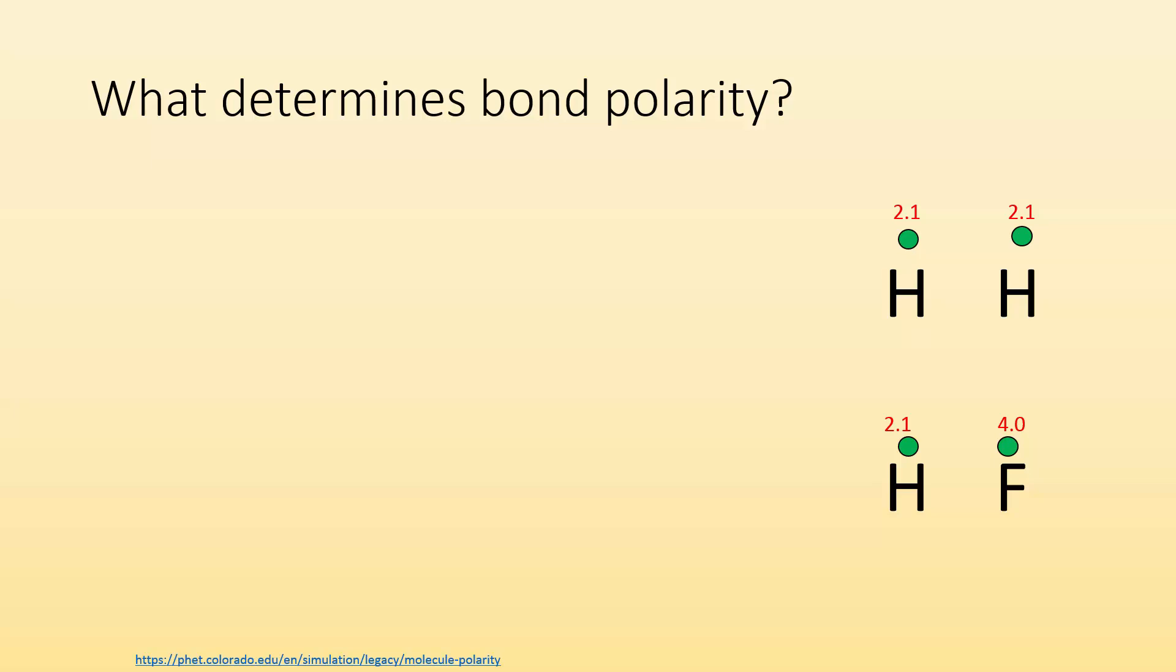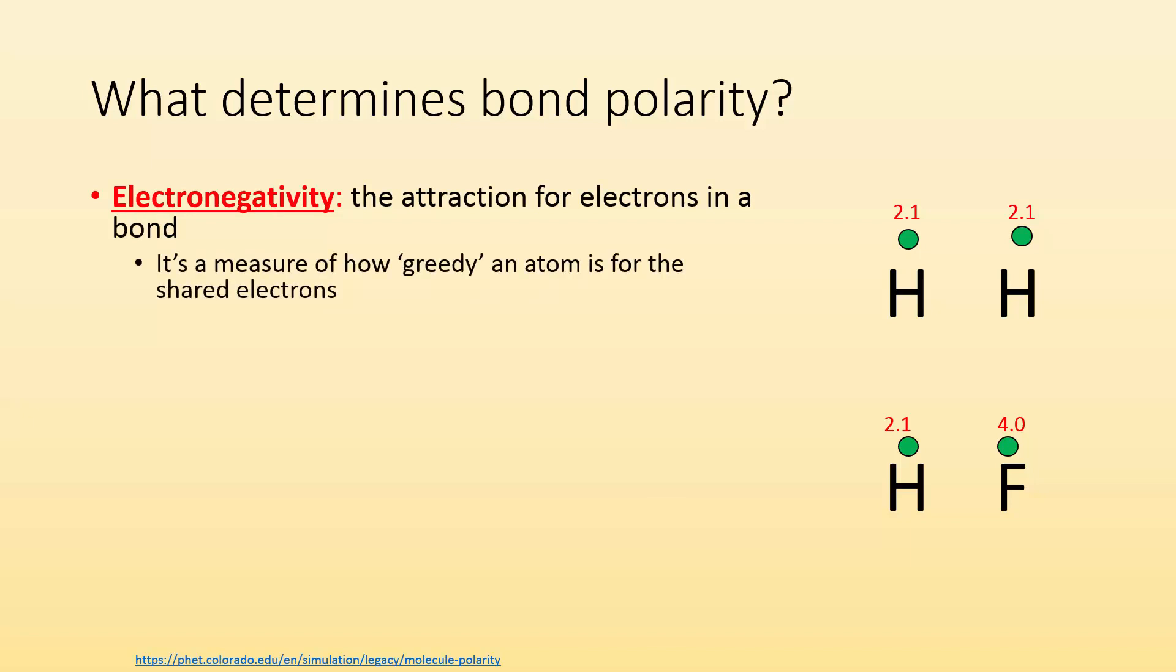So what determines bond polarity? We're going to introduce a new vocab term. It's called electronegativity, and it's the attraction for electrons in a bond. It's going to measure how greedy an atom is for those shared electrons, how much they really want to hog those electrons from the other atom. The more greedy an atom is for electrons, the greater electronegativity it is, which means it's going to hog the electrons more. It's measured on a 0 to 4.0 scale, and fluorine has the highest electronegativity.